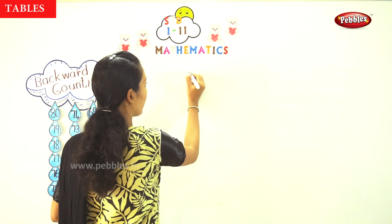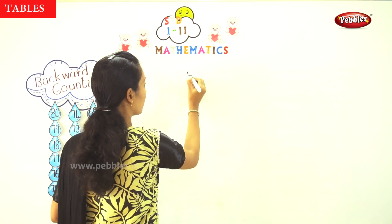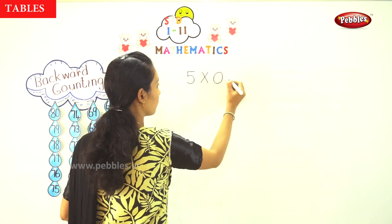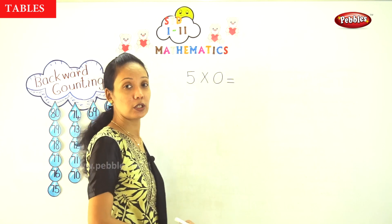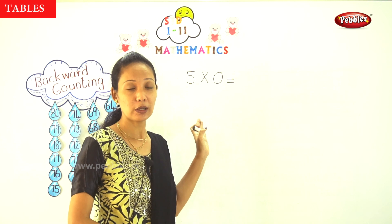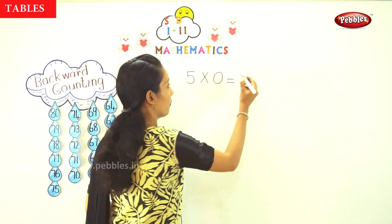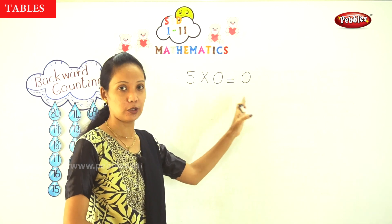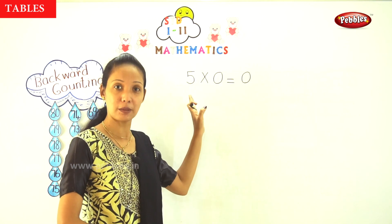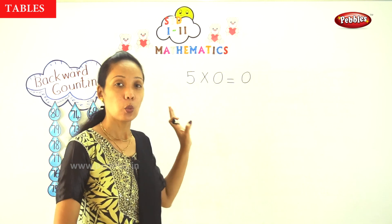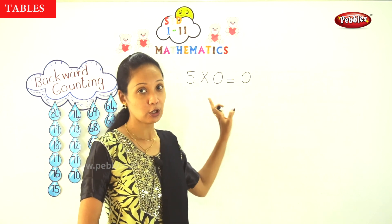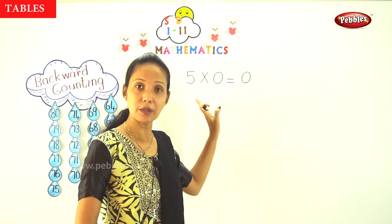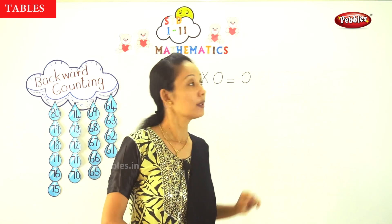Now we start with 5. That is 5 into 0. 0 has no value, so 5 into 0 is equal to 0. Whatever number you multiply with 0, the answer will be 0, because there is no value for 0. So 5 into 0 is equal to 0.